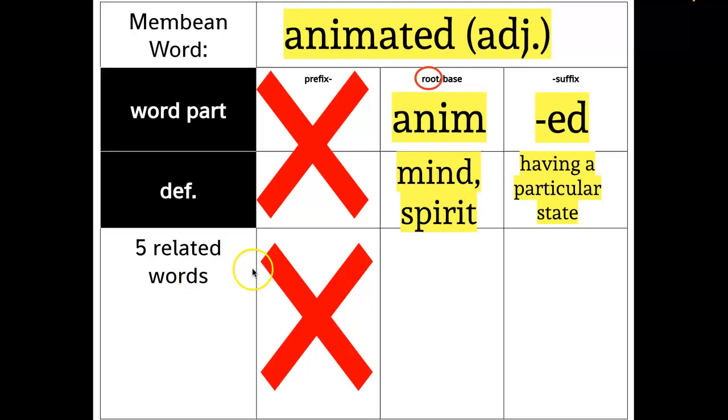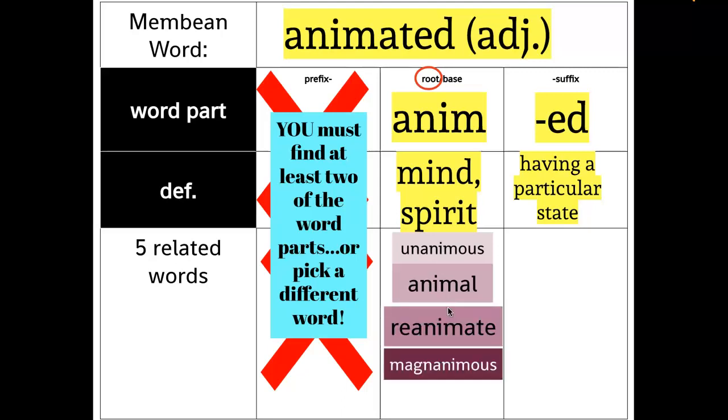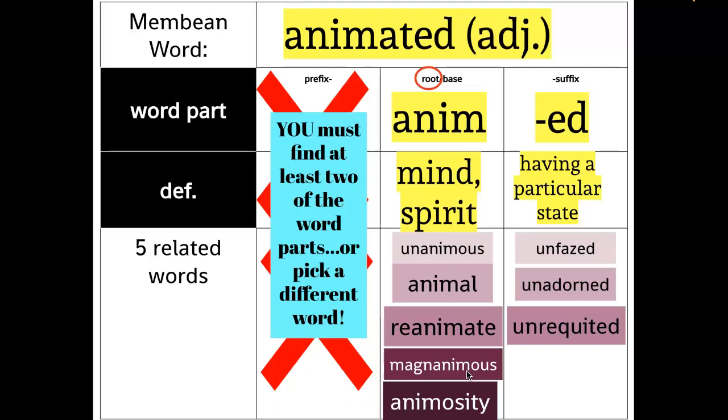So now I'm going to go find five words that also have anim in it besides animated. And this is where I can click on that little word tree. And I said you must find at least two of the word parts or pick a different word. So I see unanimous, animal, reanimate, magnanimous, and animosity all have that same word part. I'm going to try to pick words that I think I kind of am familiar with. If I get to the point where I don't know any of the words, I'm just going to pick any five. And you can always click on the word, and it will take you to the definition as well. And then for ed, I did unfazed, unadorned, unrequited, dilapidated, and disinterested.